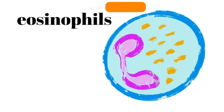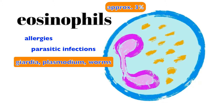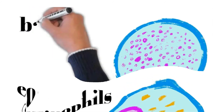Next we have eosinophils, which make up a very small percentage — roughly three percent — of all leukocytes in circulation. They get activated during allergic reactions and parasitic infections, such as giardia, plasmodium that causes malaria, and tapeworms, among other things. These percentages are important because if a blood panel is run and those percentages are elevated, it gives medical professionals a first indication of what the problem may be. If eosinophils are making up 15 percent of all white blood cells in circulation, they can focus their investigation on a parasitic infection or allergy.